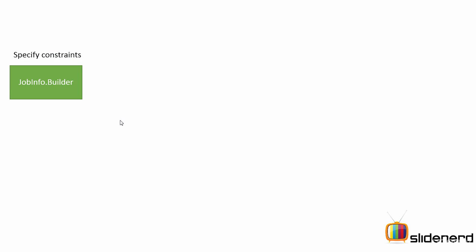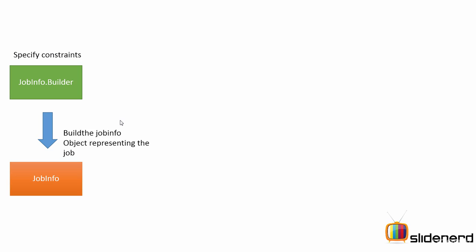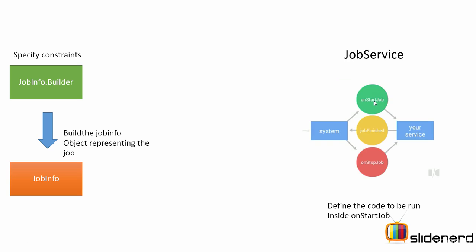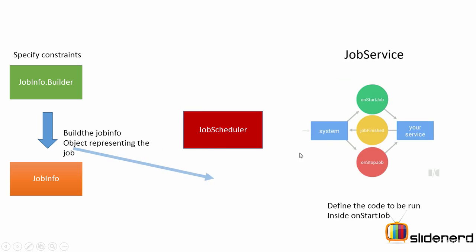Let's get a visual look at how the Job Scheduler API is supposed to be used in your app. First, define the constraints with the JobInfo.Builder class, then use the build method to create a JobInfo object. Define a class that extends JobService. Inside the OnStartJob method, define the work you want to do — it runs on the main thread by default, so create an AsyncTask for background work. Call JobFinished to indicate whether to reschedule or complete. Then call JobScheduler.Schedule passing the JobInfo object.